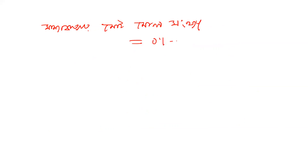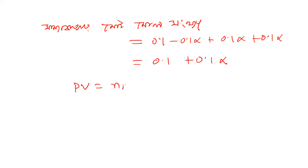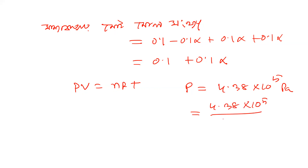This is 0.1 minus 0.1α plus 0.1α plus 0.1α. Finally, the total moles is 0.1 plus 0.1α. This gives 0.1α for the products. So 0.1α plus 0.1α plus 0.9α — the total is 0.1 plus 0.1α. Here we can convert to ATM.